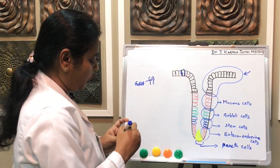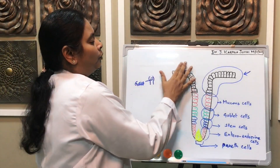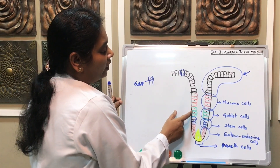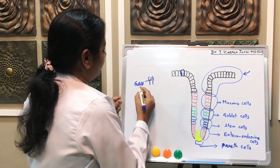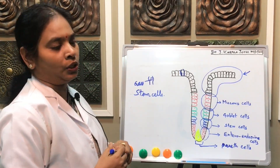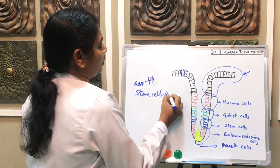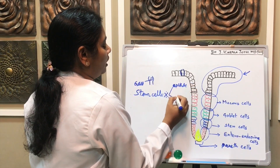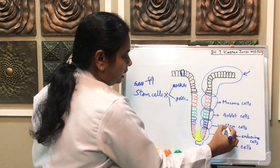Along with the epithelial cells, you will see the goblet cells. The function of the epithelial cell is absorption, and the goblet cells secrete mucus to protect the mucosa. In the middle portion, we have mucus-secreting cells and goblet cells. Along with these, in the small intestine, we have important cells called stem cells, or totipotent cells, or undifferentiated cells. These stem cells are important features present in the small intestine. These stem cells undergo differentiation into three forms: some form absorptive epithelial cells, some form goblet cells, and some go downward to differentiate into other cells.